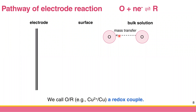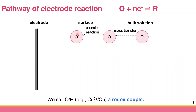The second step is that the oxidized species close to the electrode must have the appropriate chemical condition or chemical form. Sometimes the species must undergo a chemical reaction — maybe protonation, deprotonation, or cyclization — to convert to the appropriate chemical form.